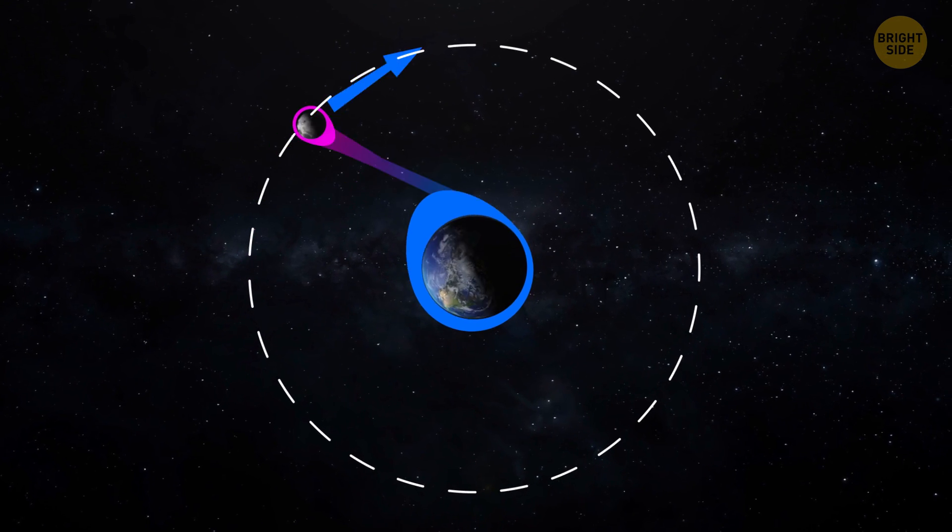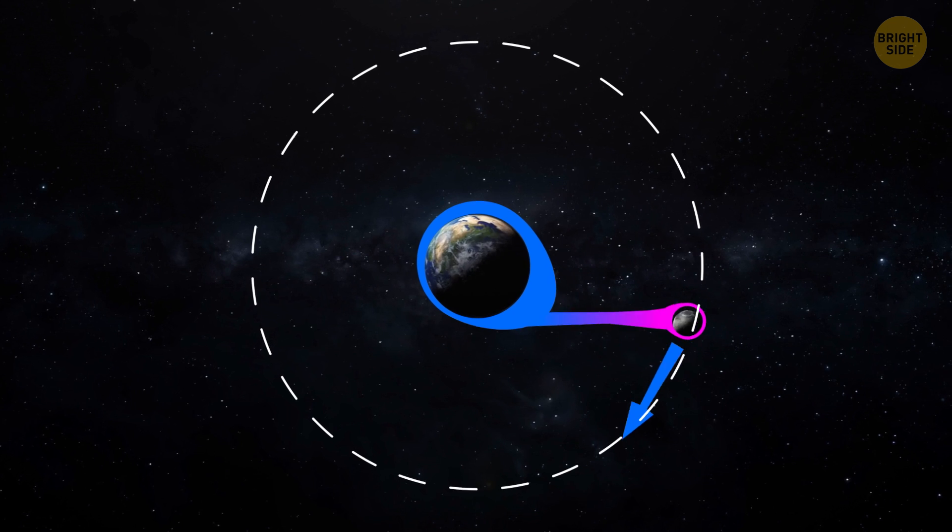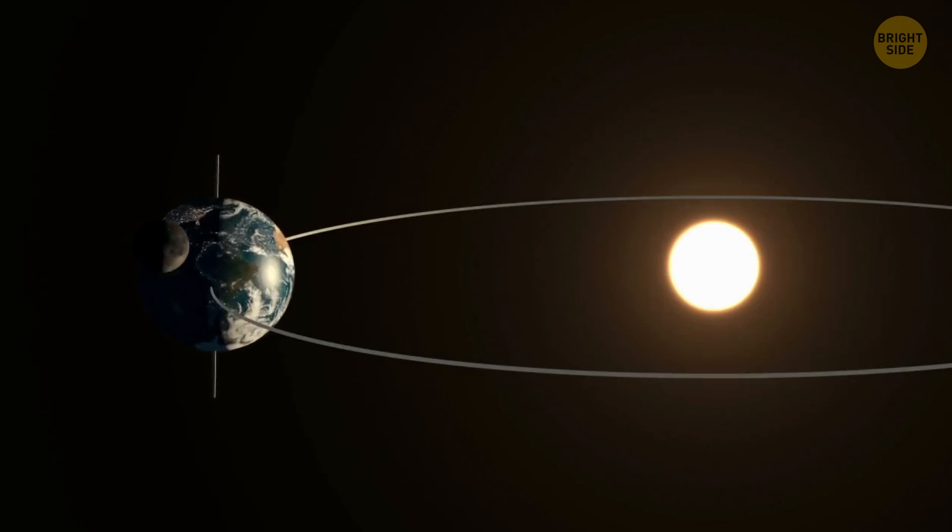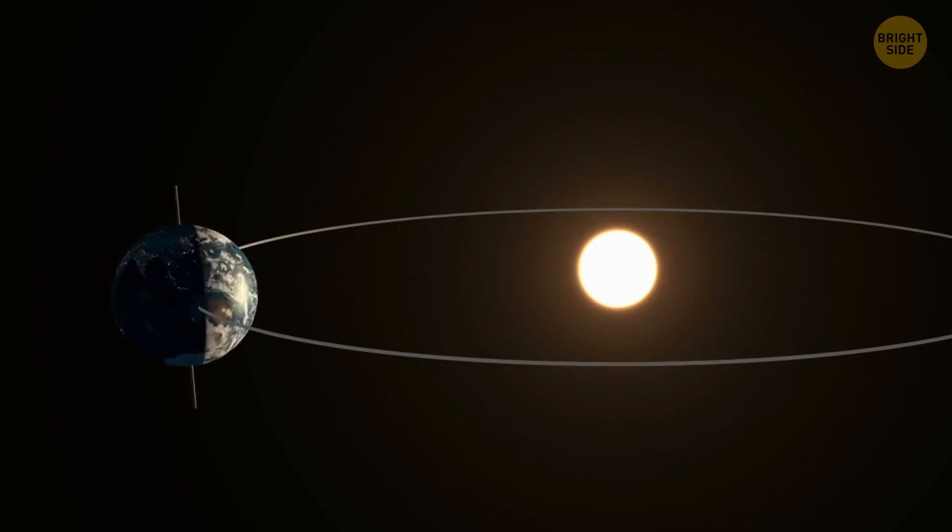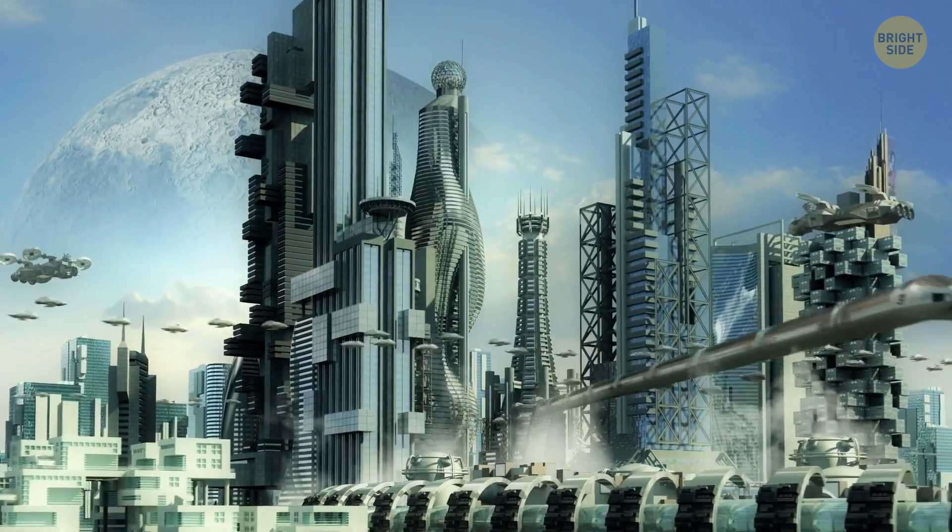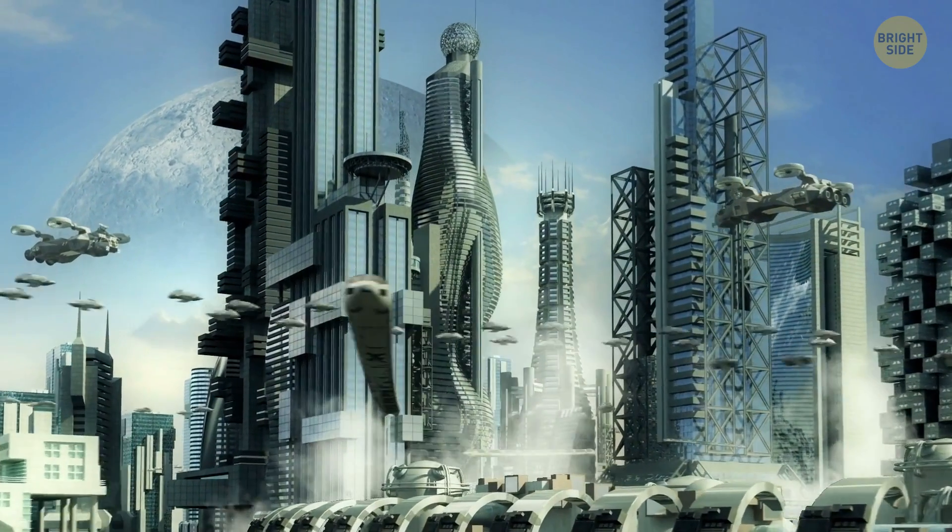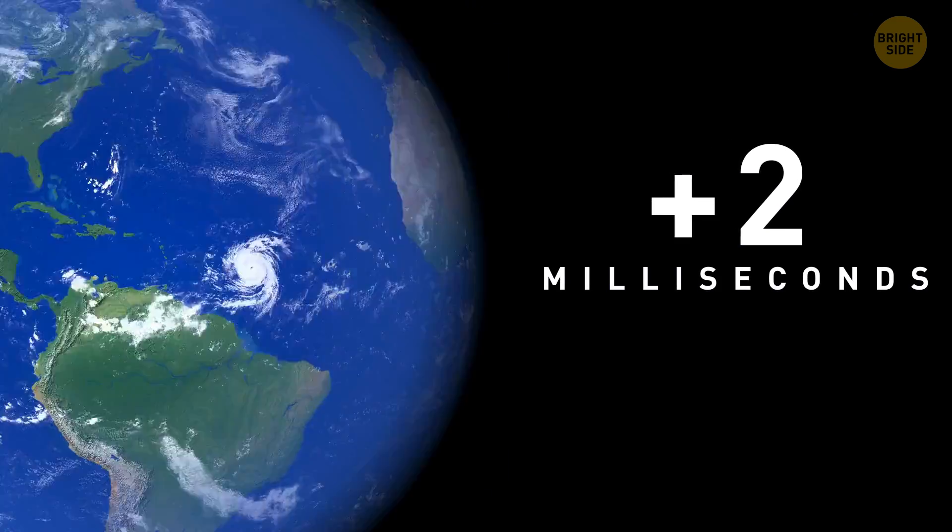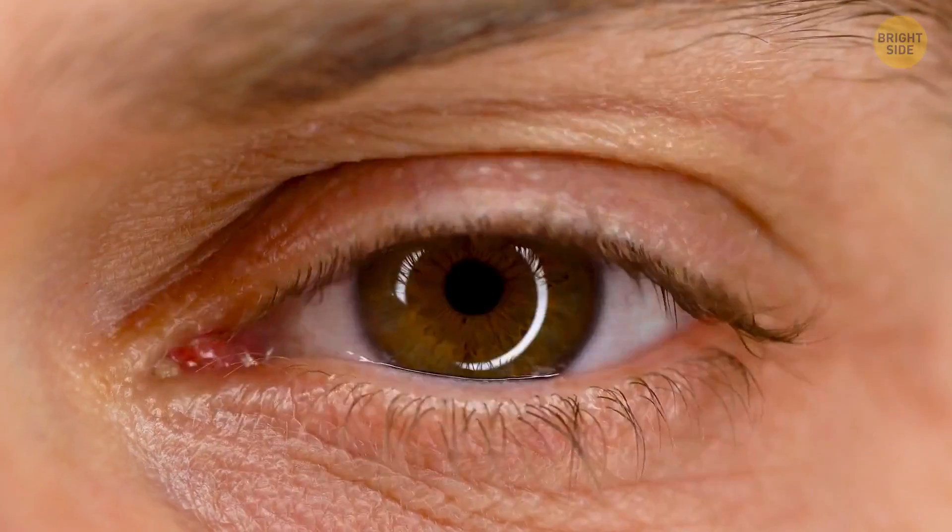While this is happening, the moon pulls back on the tidal bulge of the Earth, slowing its rotational speed, though just a fraction. A very small fraction. This means that 100 years from now, a day on Earth will be two milliseconds longer than it is right now. Blink, and you'll miss it. Literally.